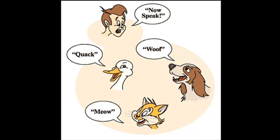Similarly, we treat dog and cat also as animals. We ask each animal to speak and they speak in their own language. Duck is taking the form of an animal, which allows us to treat it like an animal. Taking a different form is polymorphism.